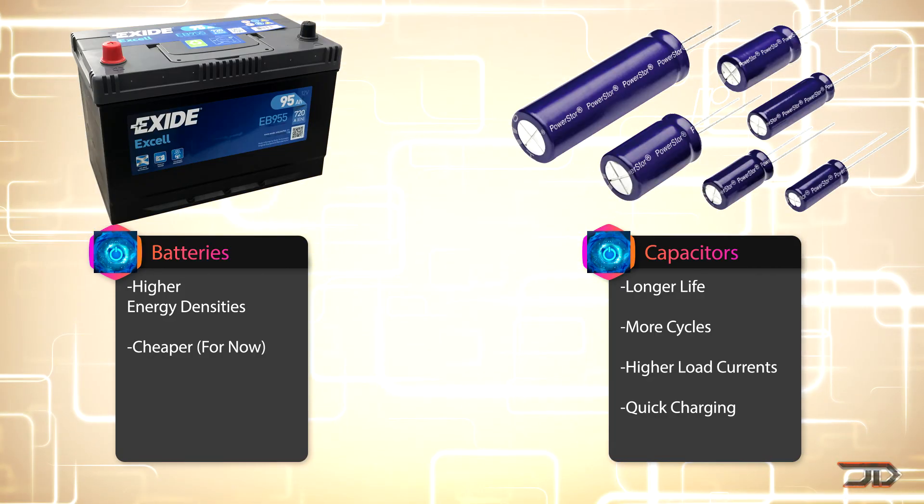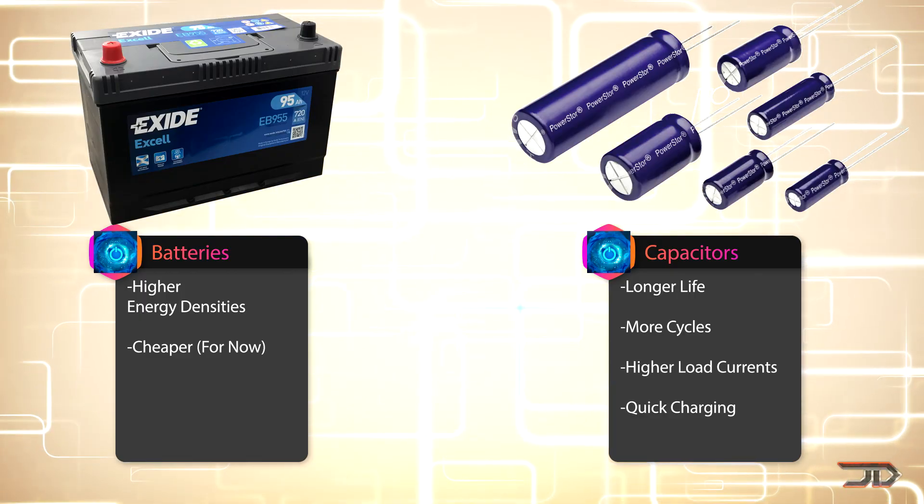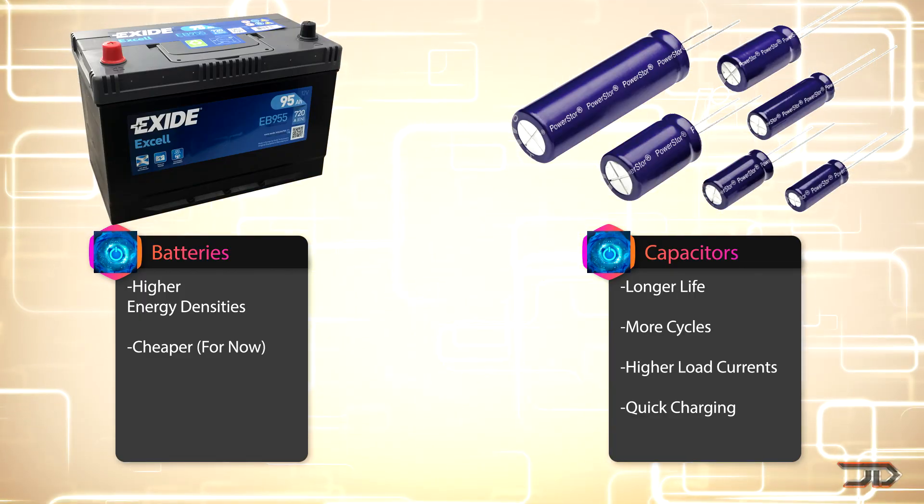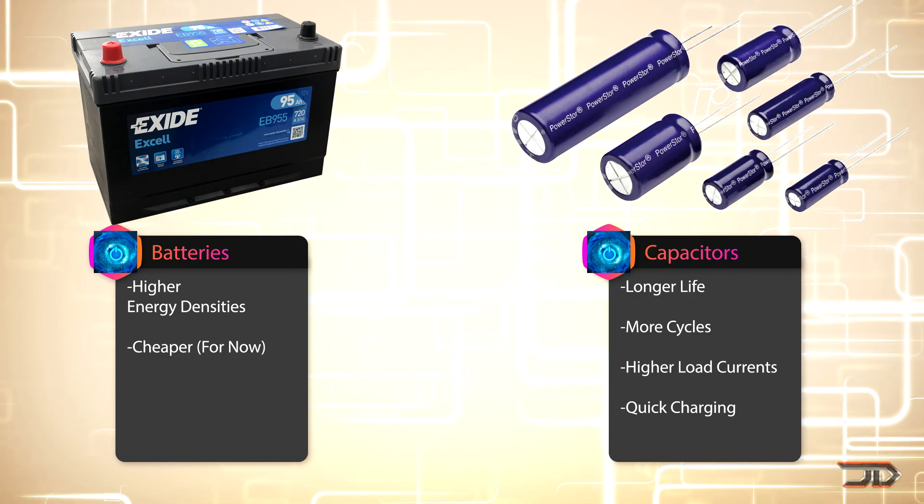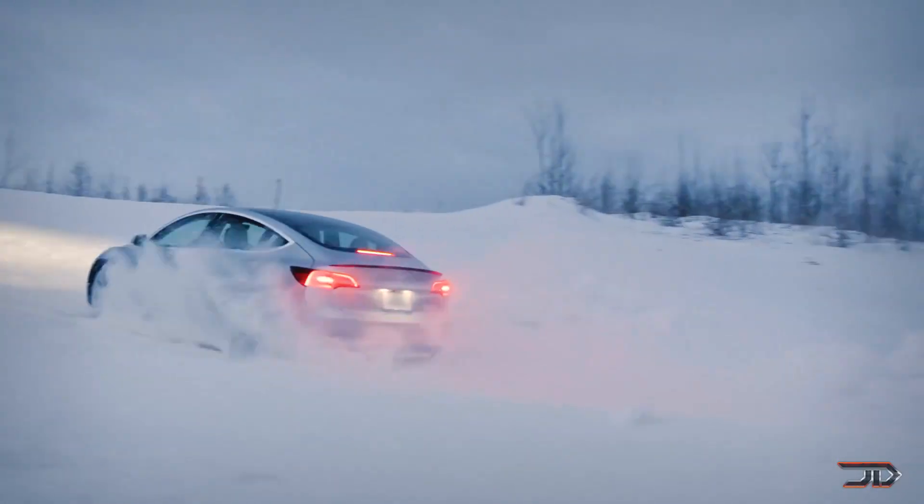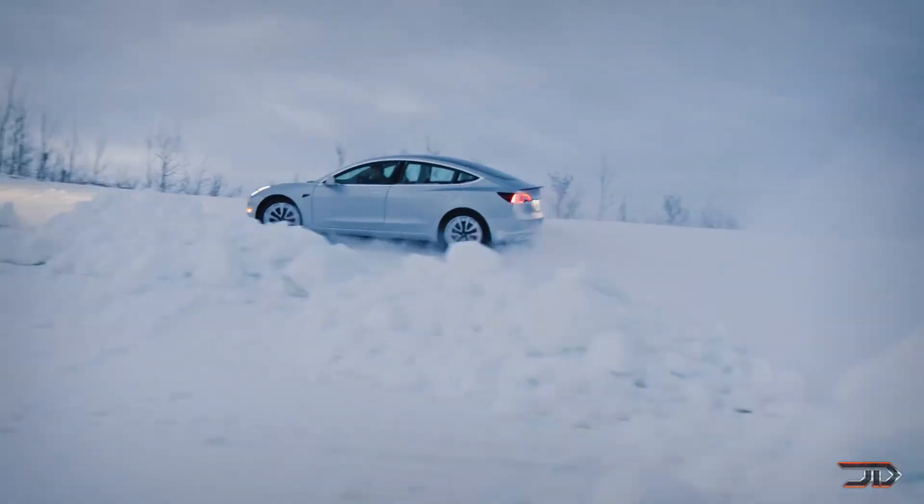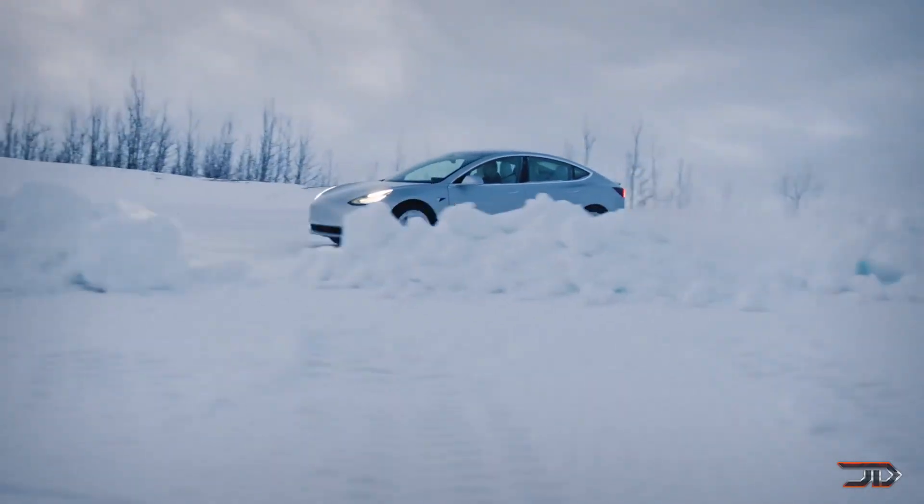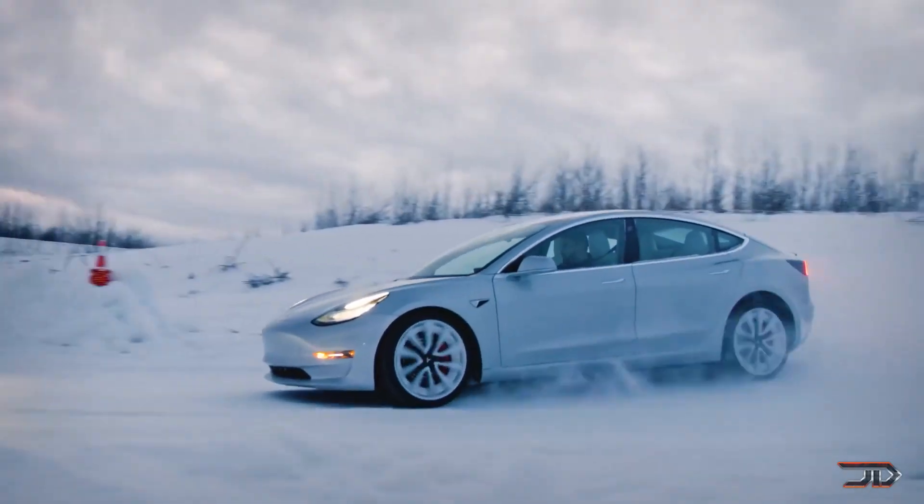That is quickly changing though, and research is being done with graphene and metal carbides to make a better capacitor which has greater energy density. Combined with getting the cost of capacitors down, then we could ultimately see the capacitor replace the battery. The question is, how long is that really going to take?